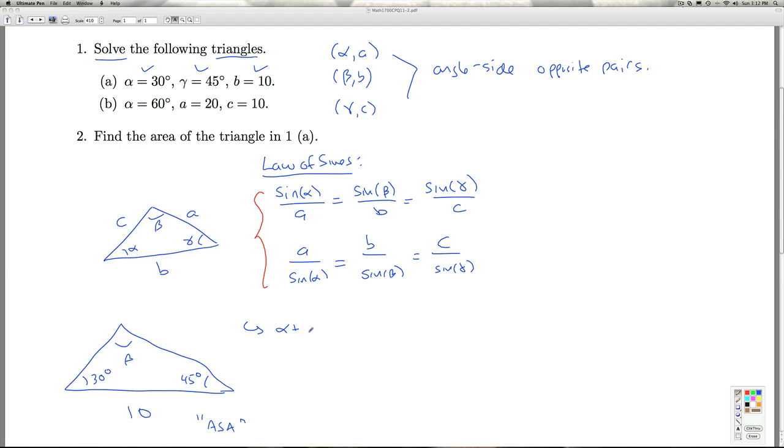Because I know that the sum of the measures of the angles in any triangle always adds up to 180 degrees. So that means that beta, I can find by taking 180 minus alpha minus gamma, which is 180 minus 30 minus 45 degrees.